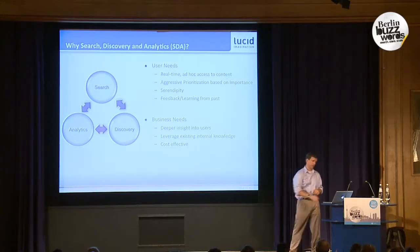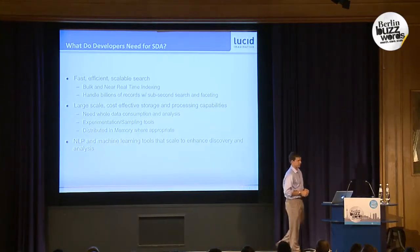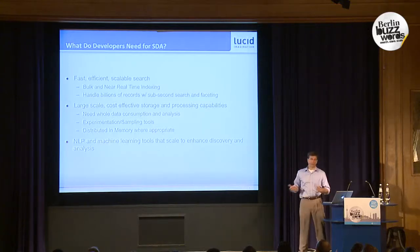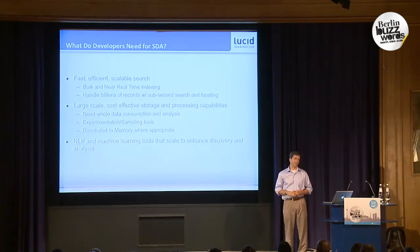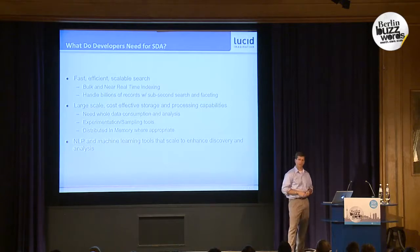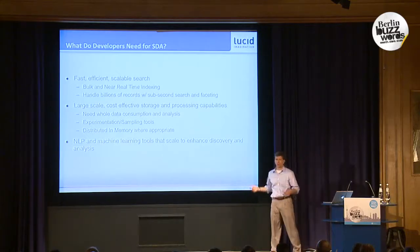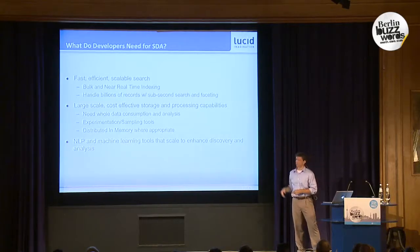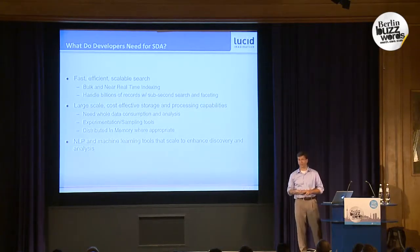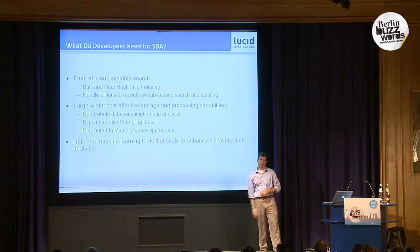What do developers need to build out a system like this? Obviously we have search in the title, so we need fast, efficient, scalable search. In my mind, you need to be able to do search at Hadoop scale — talking terabytes and petabytes. You need to be able to do that in bulk, get all of that data in when you have it built up, and also bring it in real time. You should be able to do all of this at sub-second latency, both for search and faceting — because faceting is one of the key ways to help do discovery.